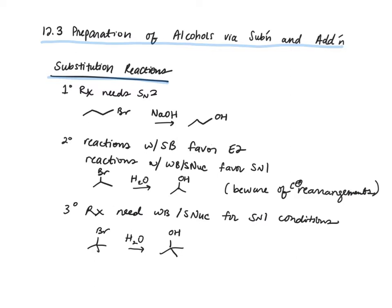Depending on whether the substrate is primary, secondary, or tertiary, we'll use different reagents. When we have a primary substituted substrate, we want to accomplish an SN2 reaction, and for that we're going to use a strong base and strong nucleophile — sodium hydroxide. For secondary alkyl halides, we can't use the same conditions because the strong base sodium hydroxide favors the E2 product.